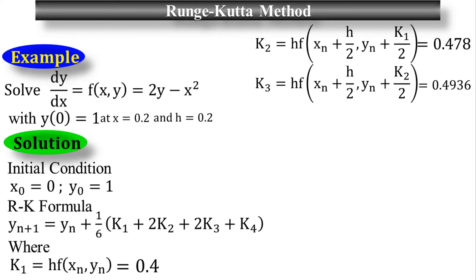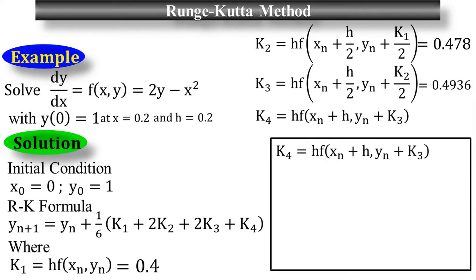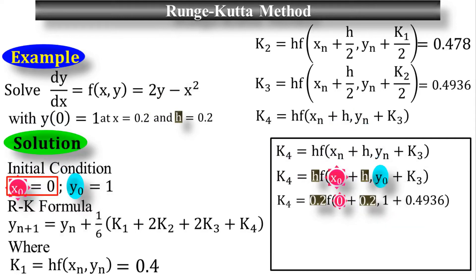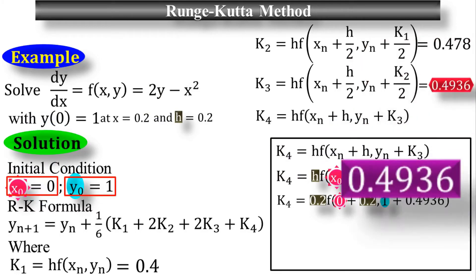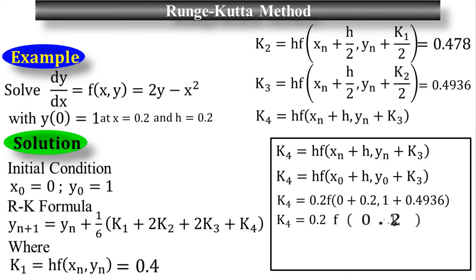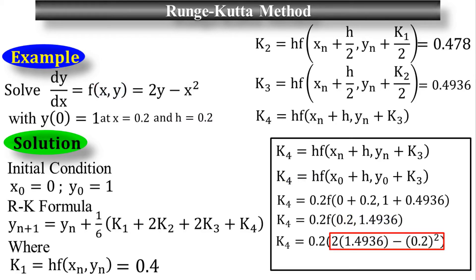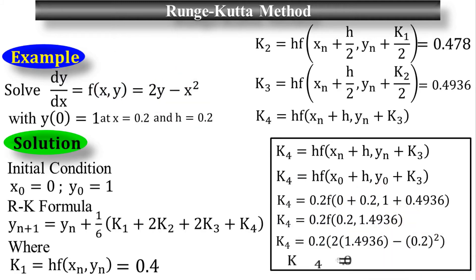For the fourth and final stage, the formula of k₄ is h times f(x_n plus h, y_n plus k₃). Substituting h equals 0.2, x_n equals 0, y_n equals 1, and k₃ equals 0.4936, this gives 0.2 times f(0.2, 1.4936). The final value for k₄ is 0.589.